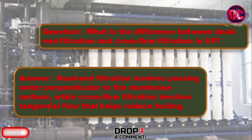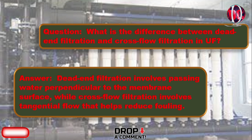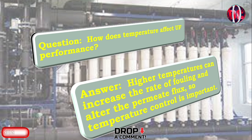What is the difference between dead-end filtration and cross-flow filtration in UF? Dead-end filtration involves passing water perpendicular to the membrane surface, while cross-flow filtration involves tangential flow that helps reduce fouling. How does temperature affect UF performance? Higher temperatures can increase the rate of fouling and alter the permeate flux, so temperature control is important.